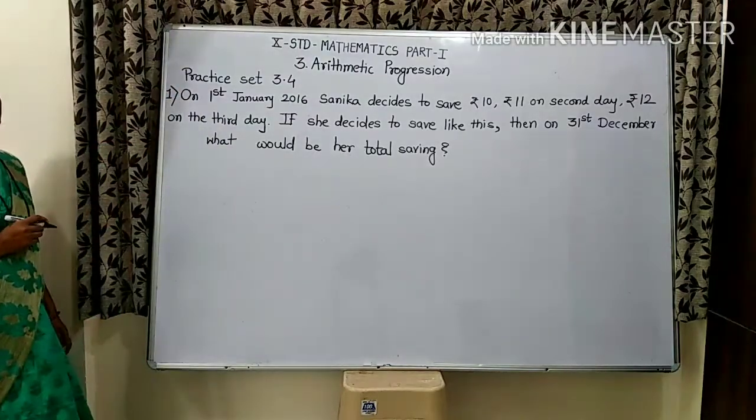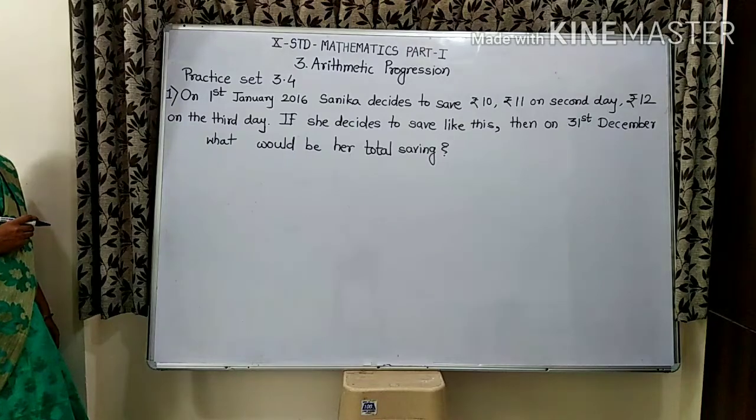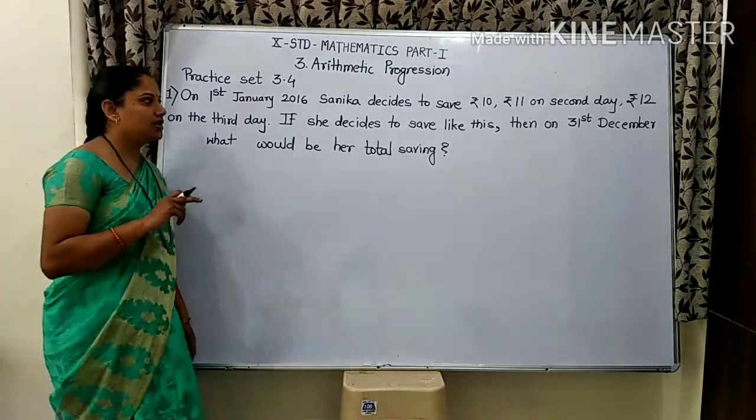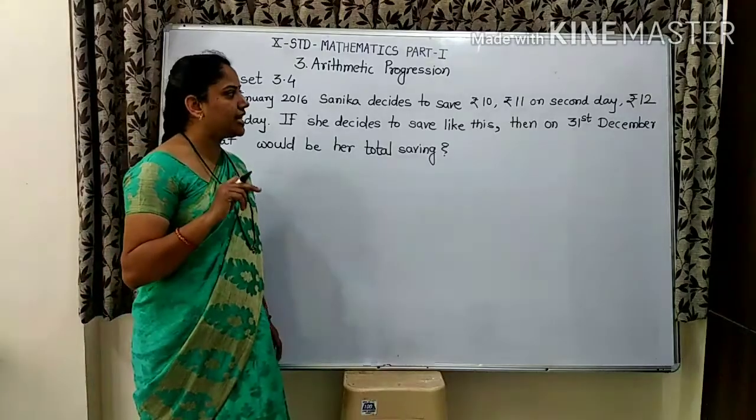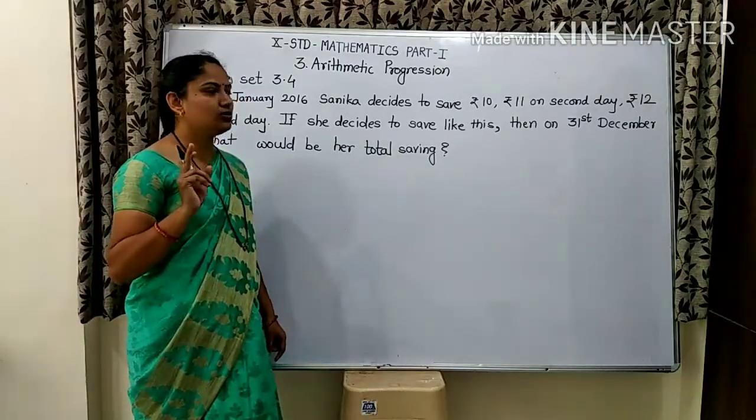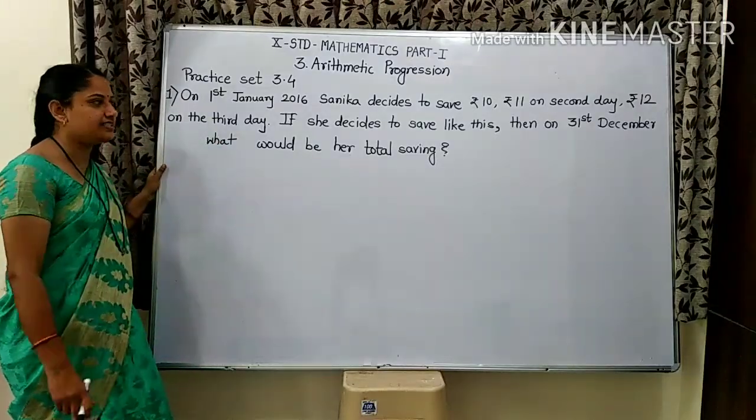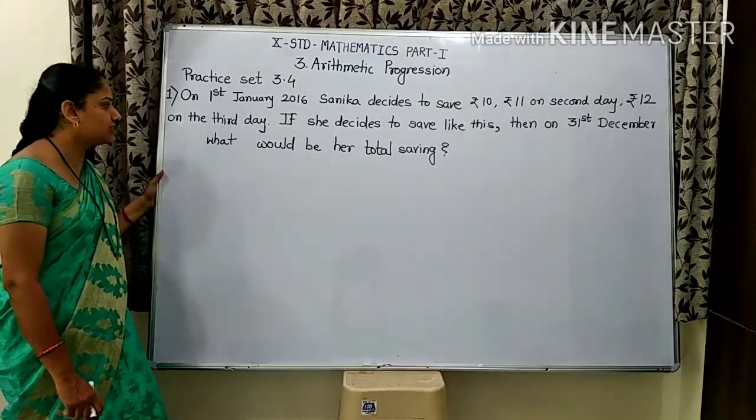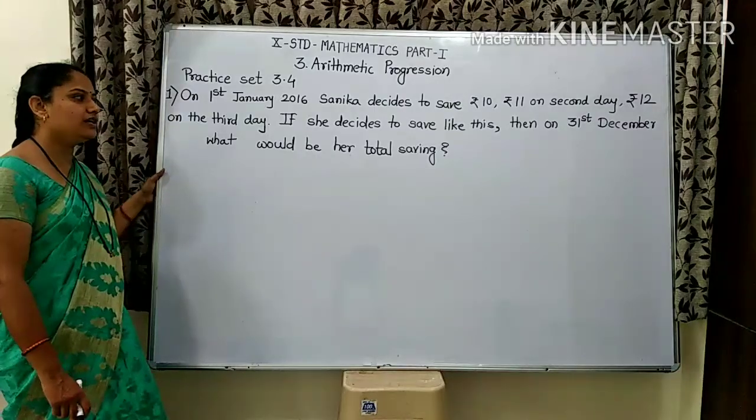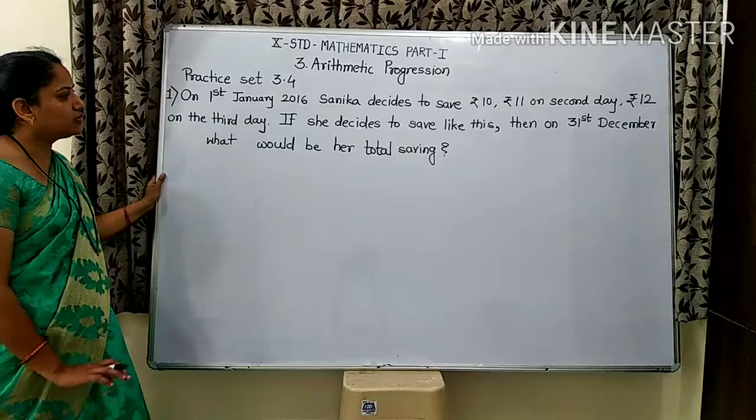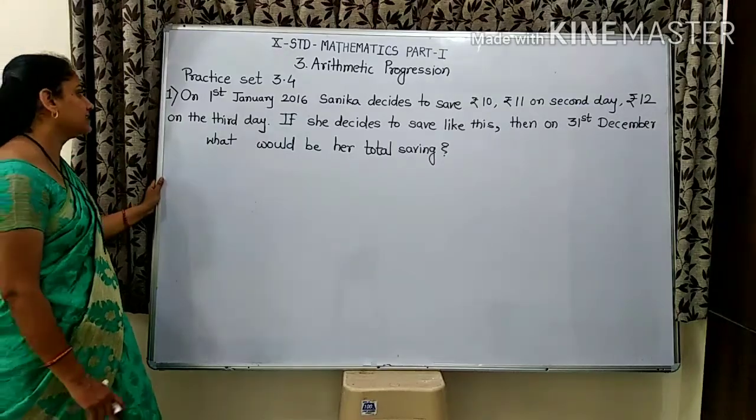On 1st January 2016, Sanika decides to save Rs. 10 on the first day, Rs. 11 on the second day, Rs. 12 on the third day. If she decides to save like this, then on 31st December, what would be her total savings? That is a total saving.